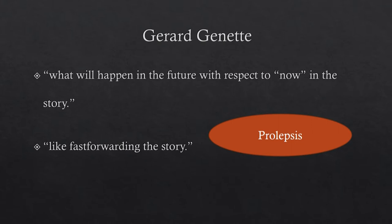Now let us look at prolepsis. Prolepsis is what happens in the future with respect to the now in the story. In the present you get a hint of what is going to happen in the future. It is like fast-forwarding the story — you get a sense of the future now. That is foreshadowing. That concept is directly related to this idea of prolepsis.